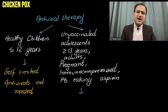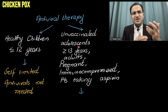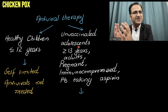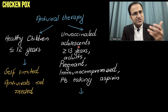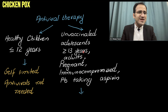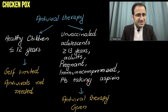The second category is unvaccinated adolescents and adults greater than or equal to 13 years of age. In adults, chickenpox infection is usually more severe with more complications than in children. So antiviral therapy is considered in adults, in pregnant patients, in immunocompromised patients, and in patients taking aspirin. These patients are at high risk of developing severe, fatal, widespread systemic infection of varicella zoster virus.